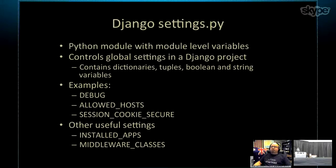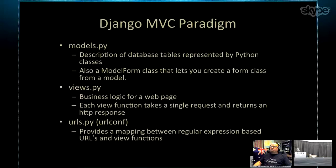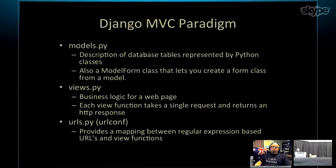Django has a settings.py, which is a Python module that controls the global variables in a project — examples include a DEBUG variable, ALLOWED_HOSTS, SESSION_COOKIE_SECURE, and things like this. Within the MVC paradigm, models.py is a common convention describing database tables represented by Python classes, views.py contains our business logic, and urls.py provides mapping between regular expressions and URL view functions, giving us separation within the Django framework.